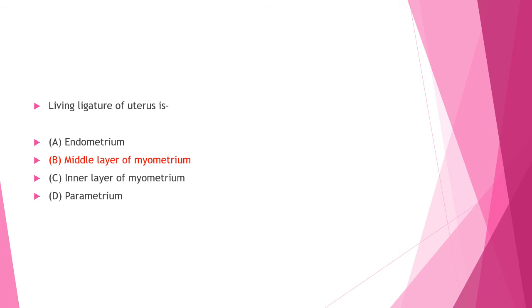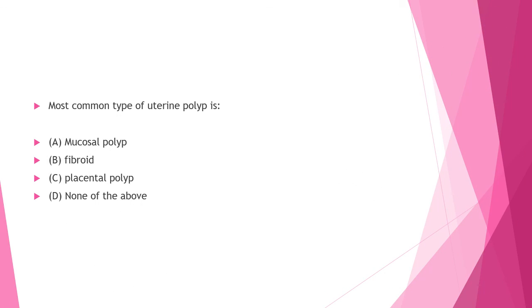Next question: Most common type of uterine polyp is — Option A: mucosal polyp, Option B: fibroid, Option C: placental polyp, Option D: none of the above. Answer to this question is Option A: mucosal polyp.